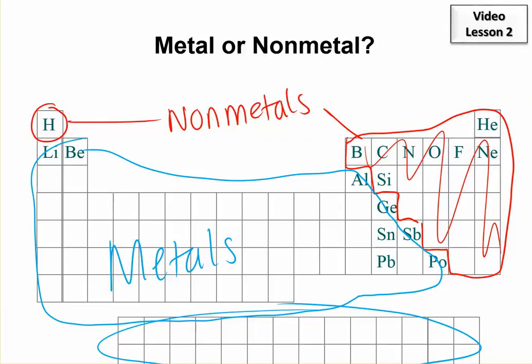Also, technically, some of the elements that are along this stair step here are sometimes called metalloids because they're kind of halfway in between being a metal and being a nonmetal as far as their properties go. But for our purposes, we're going to make it either or. Either they're a nonmetal or they're a metal. And that will give us our rules for naming and writing formulas.